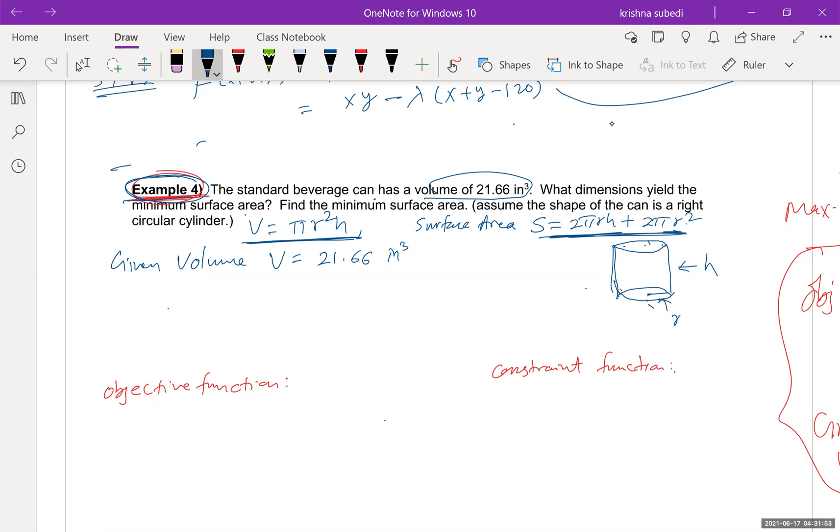First of all, what is our goal? Our goal is what dimension gives the minimum surface area. So we want to minimize surface area. That is our objective function. That is our goal.